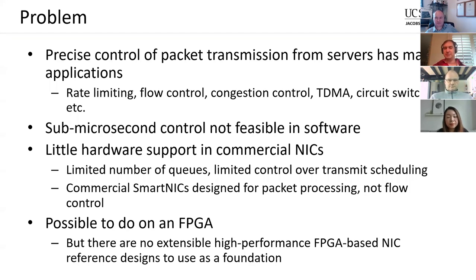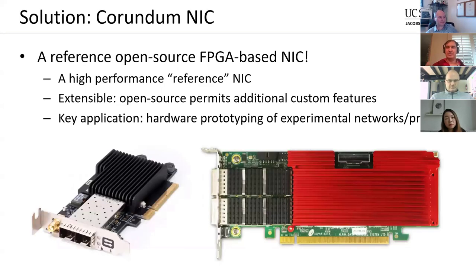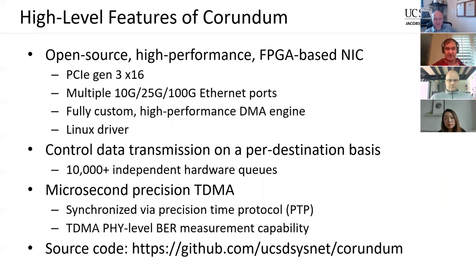We knew it was possible to do on an FPGA, but when I started working on this there were no extensible high-performance reference designs to build on. About two years ago I said we're going to do this properly and build our own NIC. That was the genesis for the Corundum project — to build a high-performance reference NIC design that is extensible and supports high-precision transmission control to enable hardware prototyping of experimental networks and protocols.